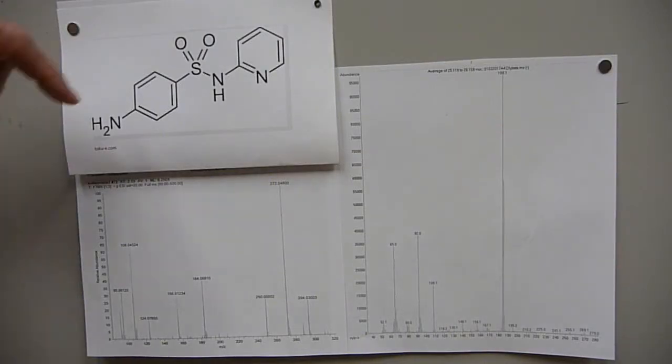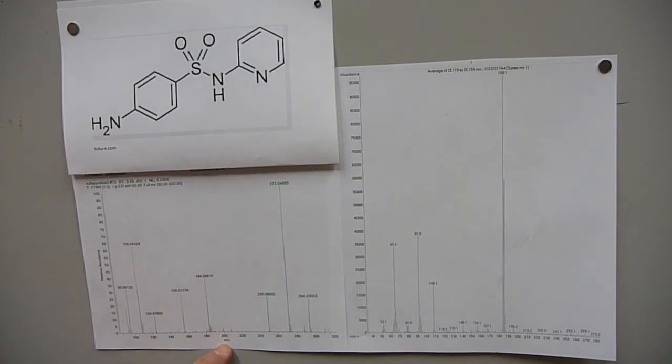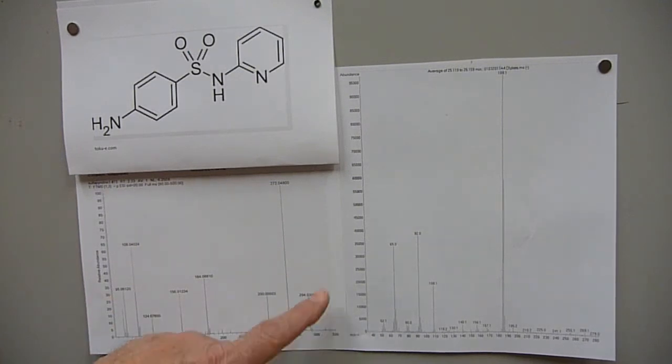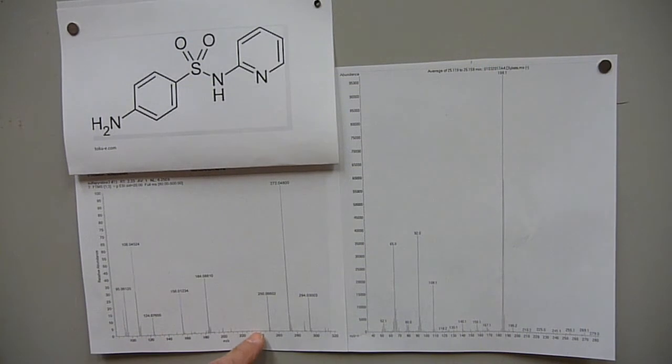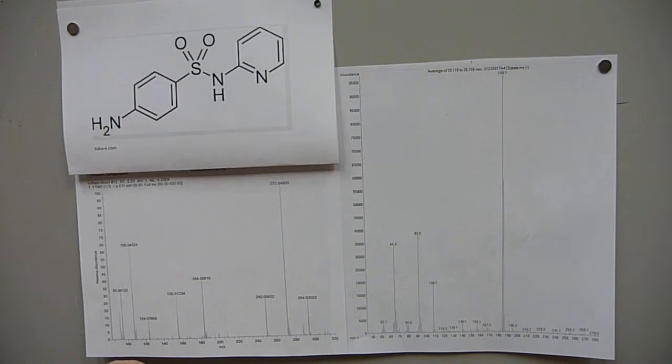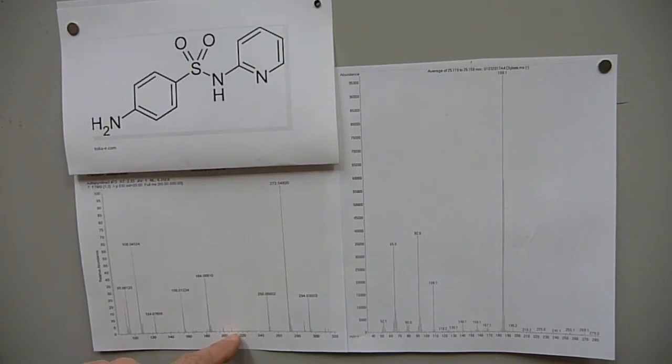As a refresher, this is the structure of sulfapyridine. This is the electrospray spectrum from roughly two weeks ago. So we had our M plus 1, M plus 23, and another one that was 22 higher. Now this is in a solution that had more water in it. But there definitely was no humongous 215.